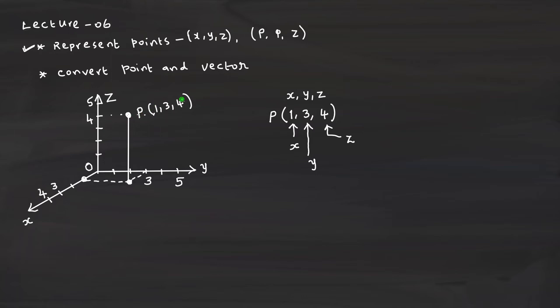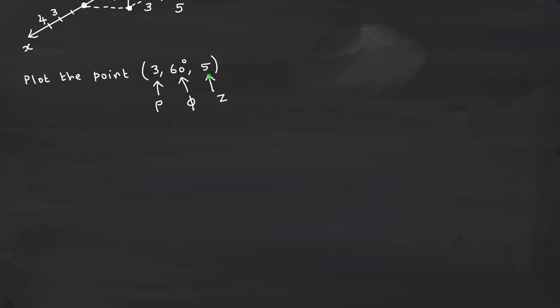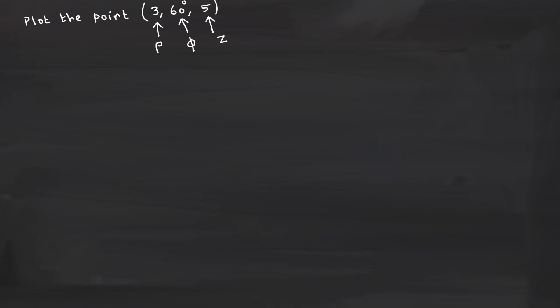If I move like this, I will be reaching a point P which is represented by 1, 3, 4. Similar to this Cartesian system, how do you draw or how do you plot a point in the cylindrical polar system? Now how do you represent this particular point in the spherical, sorry, in the case of the cylindrical system?